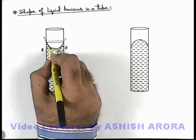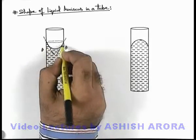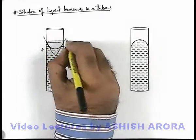That's why all the curvatures at the edges will join up and form a meniscus, it is a concave meniscus which is formed.